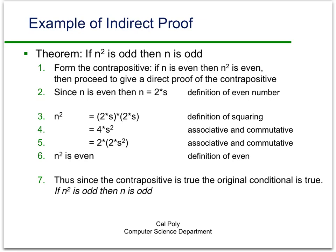So it's much easier to do an indirect proof. So what do we do? We form the contrapositive. What's the contrapositive? We take the negation of the conclusion. So if n is even, that's the negation of n is odd, then n squared is even. That's the negation of the original premise. And now we just take this contrapositive and give it a direct proof.